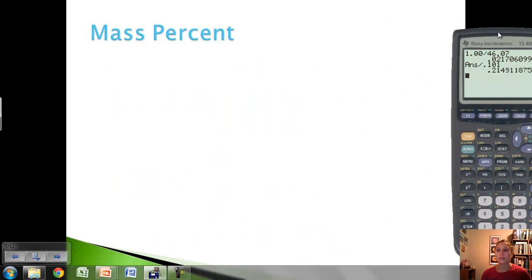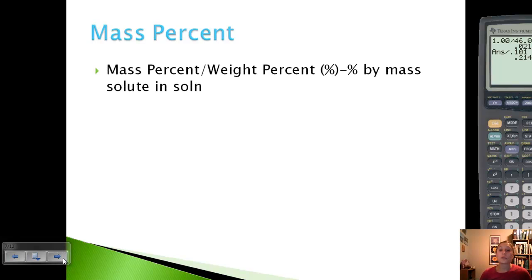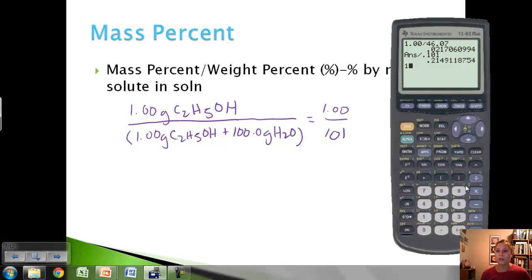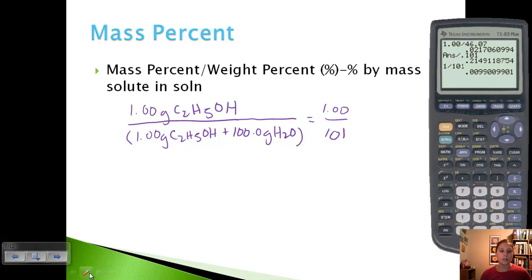Let's look at mass percent. Mass percent, or weight percent, is the percent by mass of solute in the overall solution. Our mass of ethanol is 1 gram, and our overall solution is 1 gram ethanol plus 100 grams water. So 1 divided by 101 equals 0.0099.